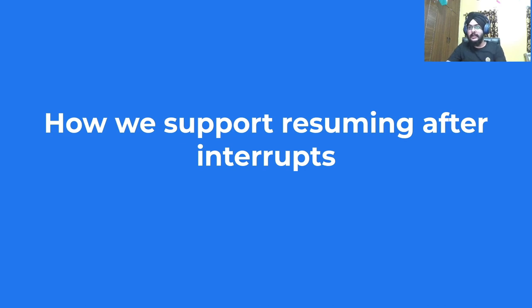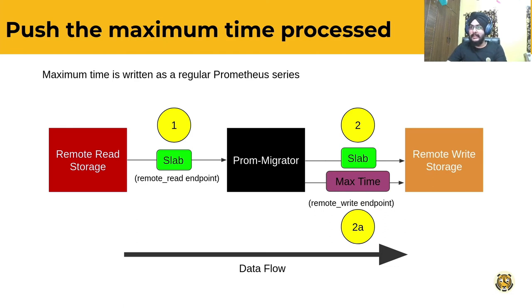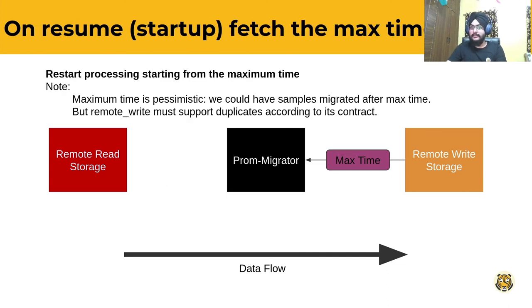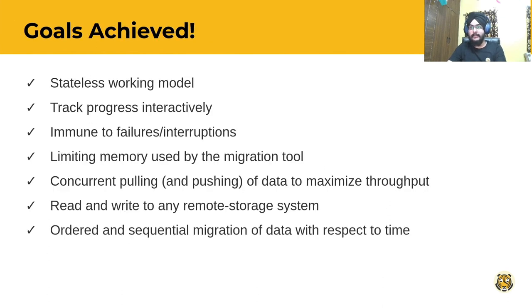PromMigrator can gracefully restart after a failure or interruption. This restart is achieved by pushing the max time of the last slab as a separate time series. This max time is fetched when the migration starts the next time, which can be after a crash, and it is treated as the starting point of the current migration. With this, we achieve a completely stateless working model that tracks progress interactively and can resume the migration process in case of a failure or interruption. This model also has better control over memory at runtime and can migrate faster using concurrent polling and pushing of data.